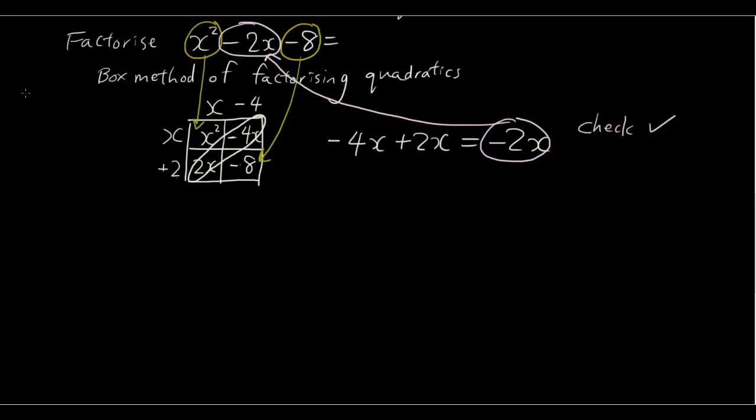So once you have done that, then you are guaranteed that the headings of your boxes, x minus 4 and x plus 2, these are the answers to your equation. These are the factorized brackets. So x squared minus 2x minus 8 is equal to x minus 4, x plus 2. So you have just factorized your first quadratic expression.